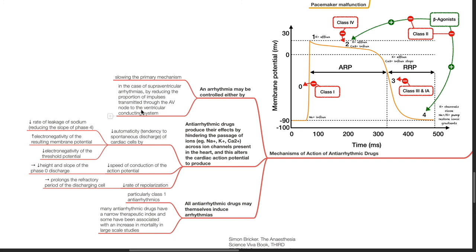To produce reduced automaticity, which is the tendency to spontaneously discharge of cardiac cells, antiarrhythmic drugs may reduce the rate of leakage of sodium thereby reducing the slope of phase 4, increase electronegativity of the resting membrane potential, or reduce electronegativity of the threshold potential. Reduced speed of conduction of the action potential results in reduced height and slope of phase 0 discharge. Reduced rate of repolarization prolongs the refractory period of the discharging cell. All antiarrhythmic drugs may themselves induce arrhythmias, particularly class 1 antiarrhythmics. Many antiarrhythmic drugs have a narrow therapeutic index and some have been associated with an increase in mortality in large-scale studies.